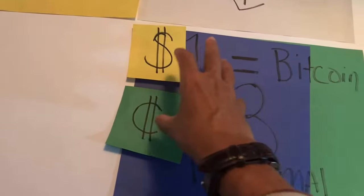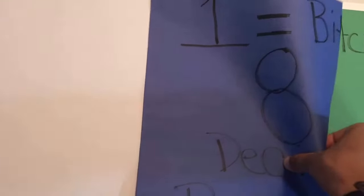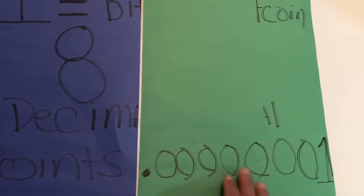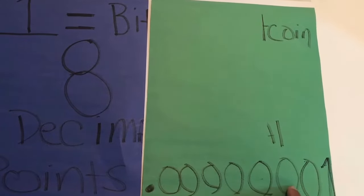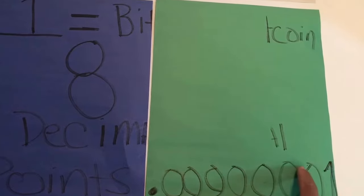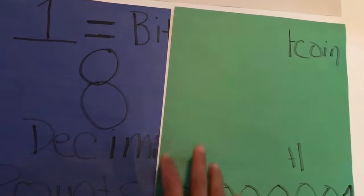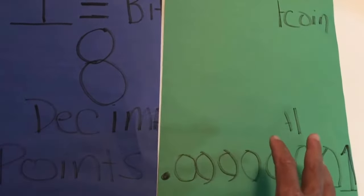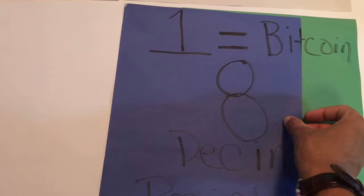For the purpose of adoption, we need to start labeling Bitcoin in terms that people can easily understand and use. Right now, only the eighth, seventh, and sixth decimal places are properly labeled. The other terms that do exist are awkward and not user-friendly. I've come up with some terms I think would make it easier for people to understand the lower end of Bitcoin value while they're building up their holdings.